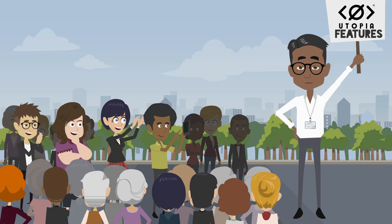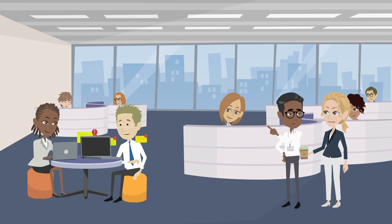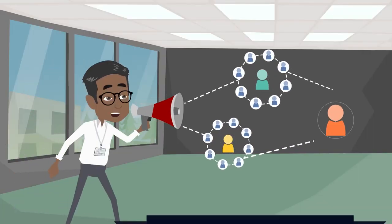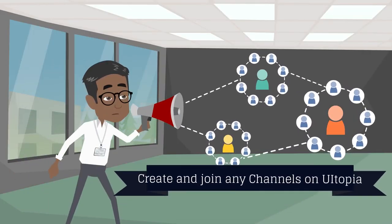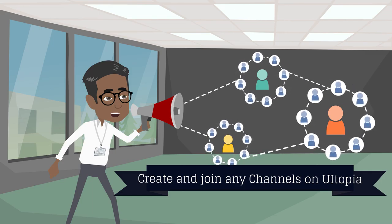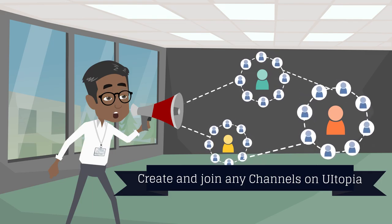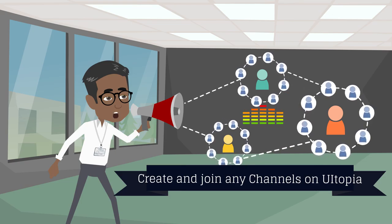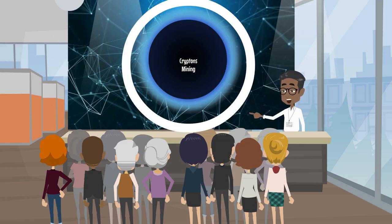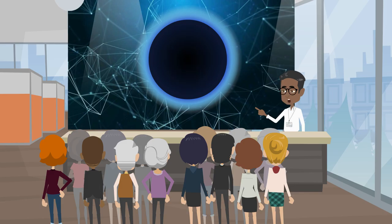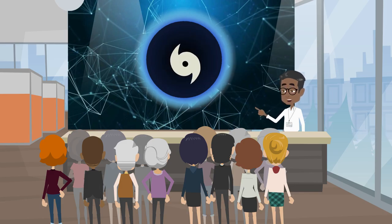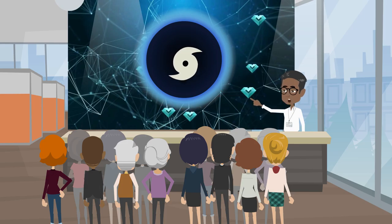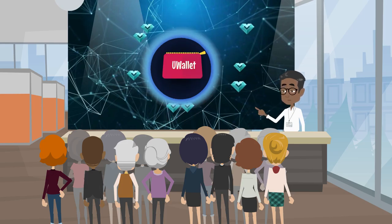Let me tell you about the features of Utopia. You can do private mail using email contact. You can create or join any channel on Utopia — a channel means a group. You can also have a private chat or voice chat with your friends. There is an important feature called Krypton mining, which is very easy — you do not need any technical knowledge. Just start the software and it will automatically start mining your Kryptons, which get stored in your Utopia wallet.